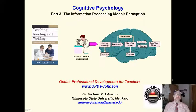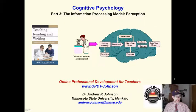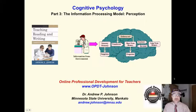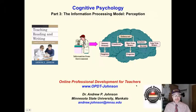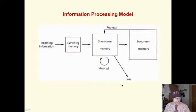All right, now we're getting ready to rumble. This is part three. We're looking at cognitive psychology. We are going to address the information processing model, and we're going to look at the first part of it: perception.